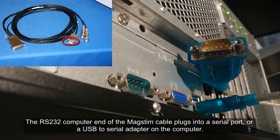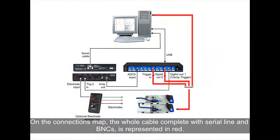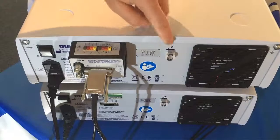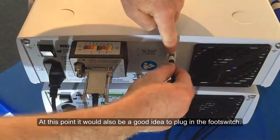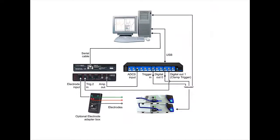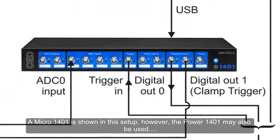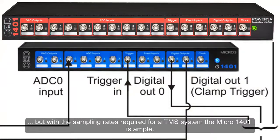DIP switches on top of the MagStim EMG interface module allow output pulse widths and polarity to be adjusted for compatibility with most third-party devices. This module is not required when setting up a system with Signal, since the 1401 responds very quickly to TTL events. The RS232 computer end of the MagStim cable plugs into a serial port or a USB to serial adapter on the computer. On the connections map, the whole cable, complete with serial line and BNCs, is represented in red. At this point it would also be a good idea to plug in the footswitch. A Micro 1401 is shown in this setup; however, the Power 1401 may also be used, but with the sampling rates required for a TMS system, the Micro 1401 is ample.